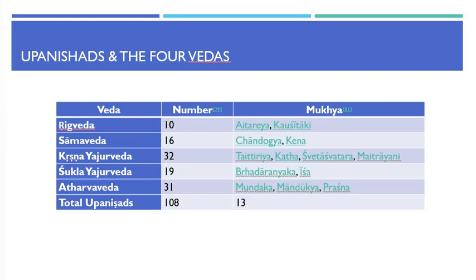Brihadaranyaka and Isha are associated with Shukla Yajurveda in addition to 17 others. Mundaka, Mandukya, and Prashna are associated with Atharva Veda in addition to 28 other Upanishads. In total there are 108 Upanishads, with 13 being the Mukhyaya.